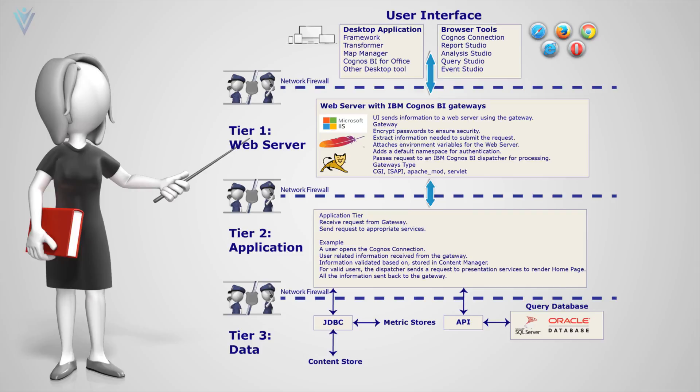On the database server you can find the content store. Content store is used for storing IBM Cognos services related data. You can also find other databases for storing business related data or data for reporting. All the servers are separated via firewall, or you can say all the servers have their own network firewalls.